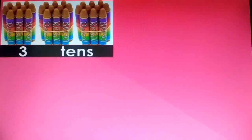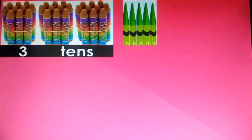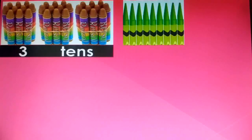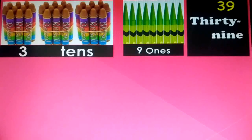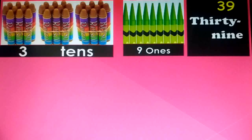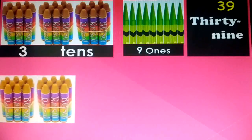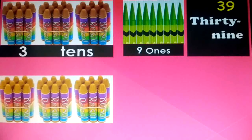1 ten, 2 tens, 3 tens, and 9 ones. 3 tens and 9 ones is 39. T-H-I-R-T-Y, 30, dash, N-I-N-E, 9. Thirty-nine. 1 ten, 2 tens, 3 tens.